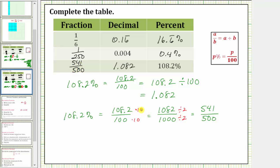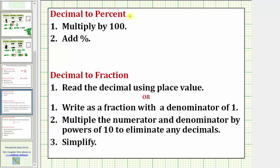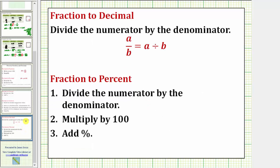Before we go, I will show the formal rules for performing all these conversions. But as long as we can remember a fraction bar means division and a percent is a number compared to 100, we should not have to memorize all the rules. Here are the rules for converting a percent to a fraction and a percent to a decimal. Here are the rules for converting a decimal to a percent and a decimal to a fraction. And finally, here are the rules for converting a fraction to a decimal and a fraction to a percent. I hope you found this helpful.